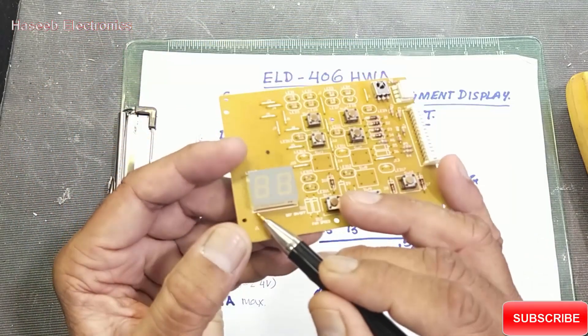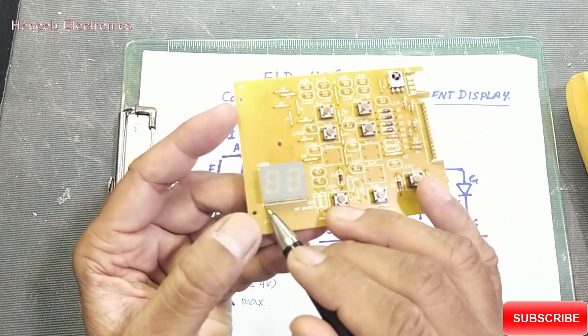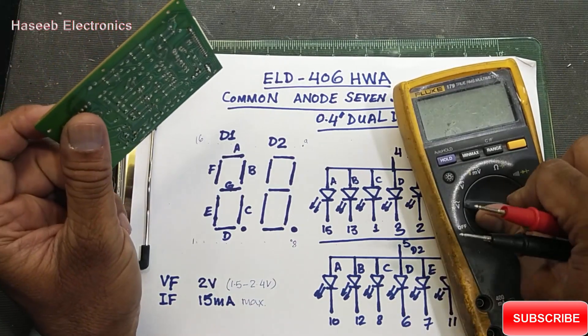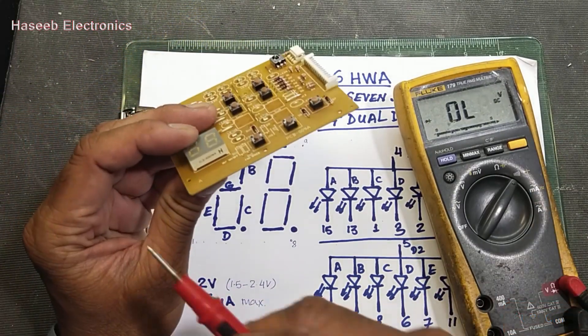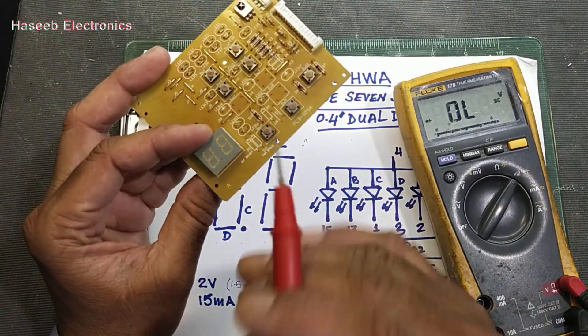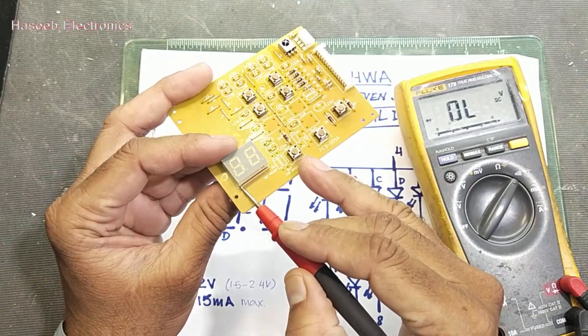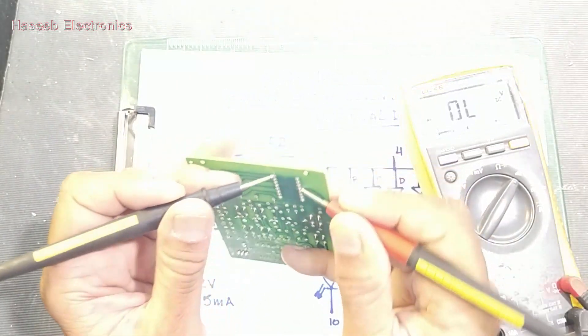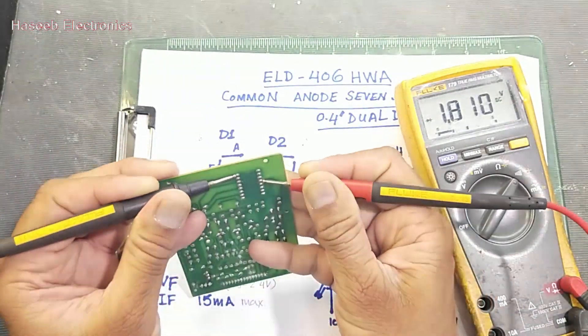To test it, set multimeter to diode mode. As I discussed, from this point it is pin number 1. Here 1, 2, 3, and 4, and the last one that is pin number 16.